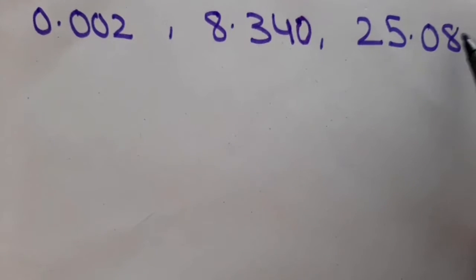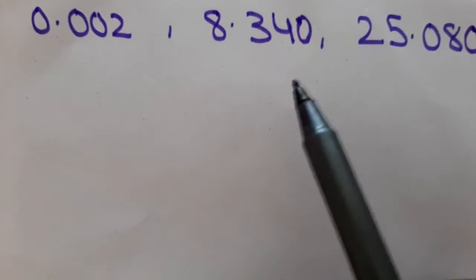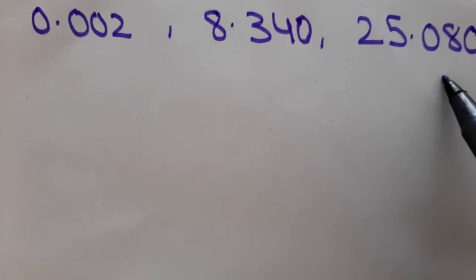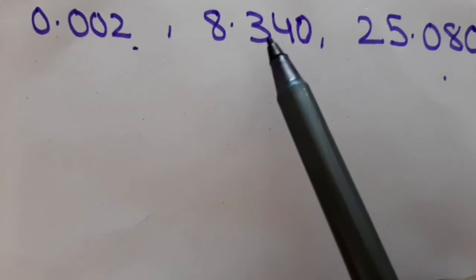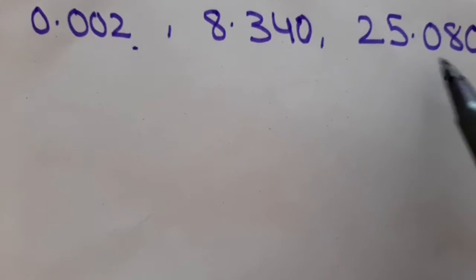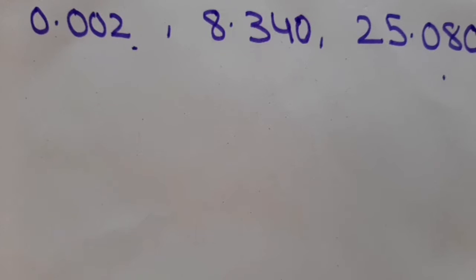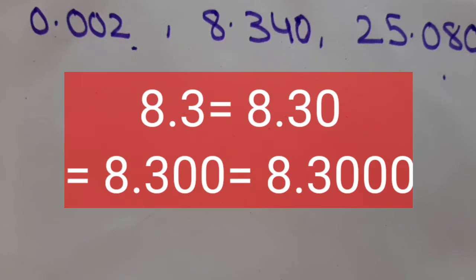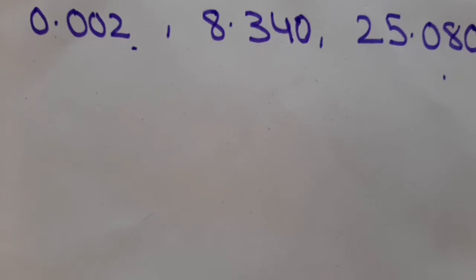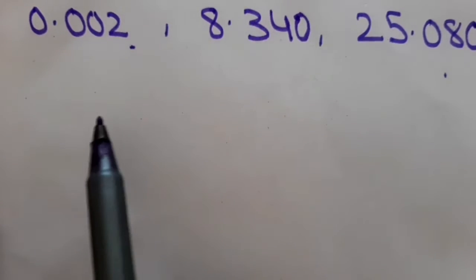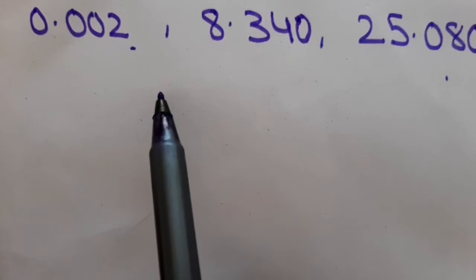I will add one zero to the second number and one zero to the third number. Now all the decimal numbers have become like decimals — the number of digits after the decimal is 3 for all of them. After the decimal, you can put as many zeros as you want; for example, 8.34 equals 8.340 equals 8.3400. It makes no difference. So first, change all decimal numbers to like decimal numbers.